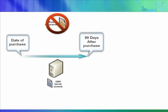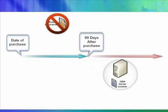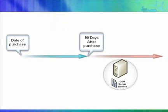By choosing not to add software assurance in the first 90 days, your OEM server license remains bound by the OEM licensing rights. As such, it is now permanently attached to the original server it was purchased with. So when you have owned your server for more than 90 days, you no longer have the option to add software assurance. So what happens if you choose to replace that physical server or upgrade its motherboard at any point down the line?